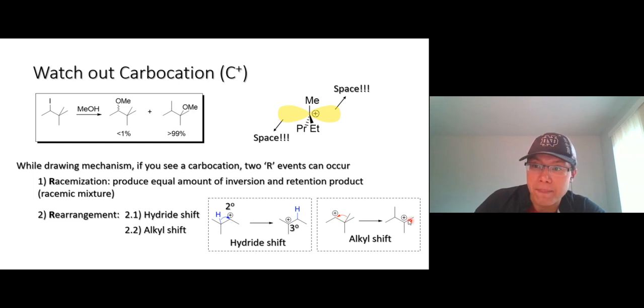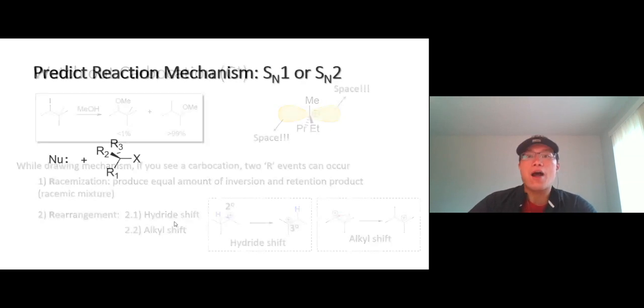And if you don't see a hydride shift, look for an alkyl shift. In this case, it's a methyl shift onto the right side, you get better carbocation. Hydride shift occurs faster than an alkyl shift. If you see carbocation, be mindful for two R events: racemization - can you get two products? And rearrangement - could be hydride shift or could be alkyl shift.